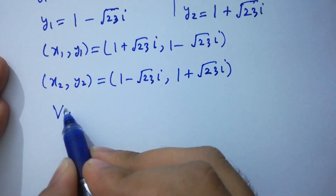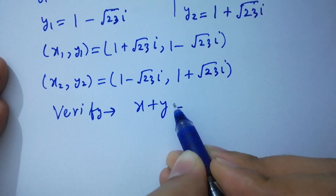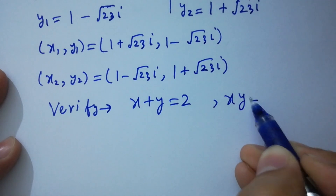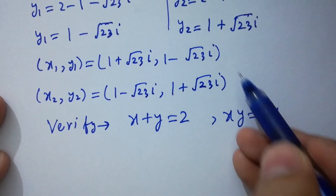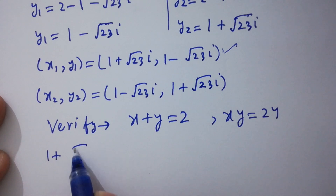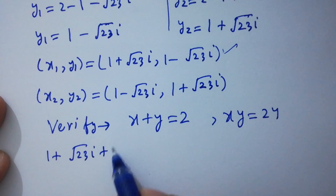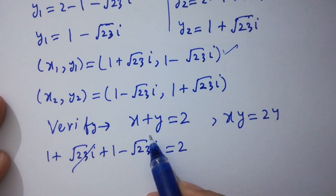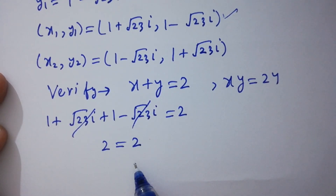Now let's verify x plus y equal to 2. Substituting x1 and y1: (1 plus square root of 23i) plus (1 minus square root of 23i) equals 2. The square root of 23i terms cancel, leaving 1 plus 1 equals 2. Left hand side equals right hand side — verified.